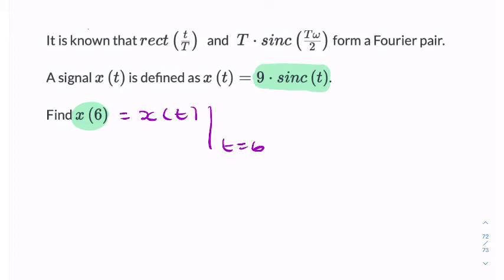We can simply write the sinc function for what it is. It's sinc t over t. So that's simply 9, sorry, sin t, not sinc t. So sin 6 over 6.